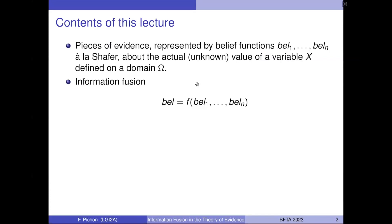The problem we talk about is the following. Suppose we have pieces of evidence represented by belief functions — here we have n belief functions about the actual unknown value of a variable X defined on the domain omega. What we'd like to do is to somehow combine these belief functions into a single one representing what we know about the variable X. We would like some function F that takes as inputs these n belief functions and produces as output a single belief function.